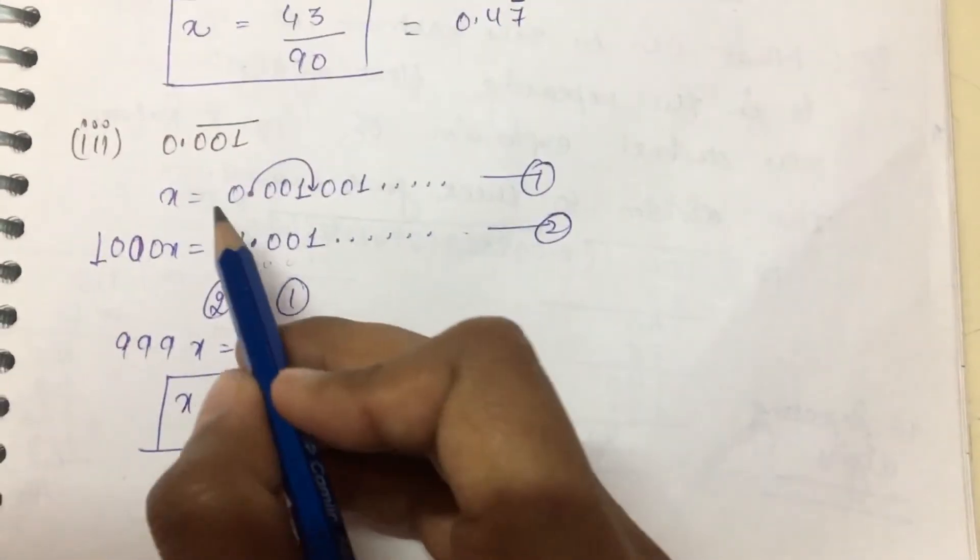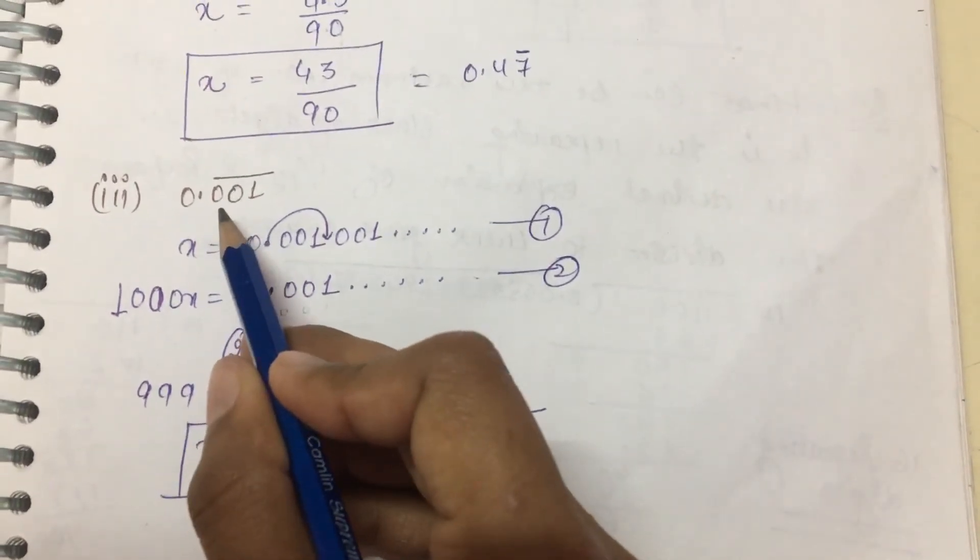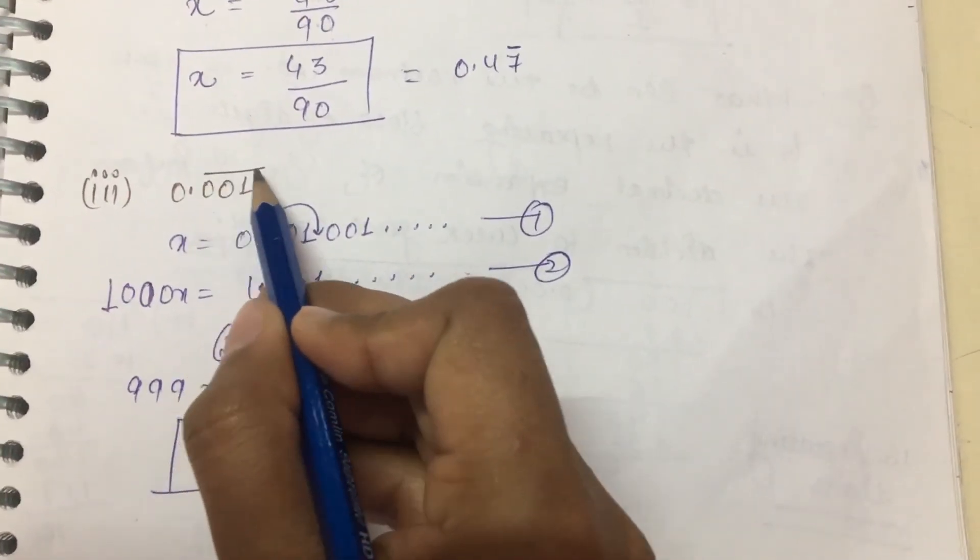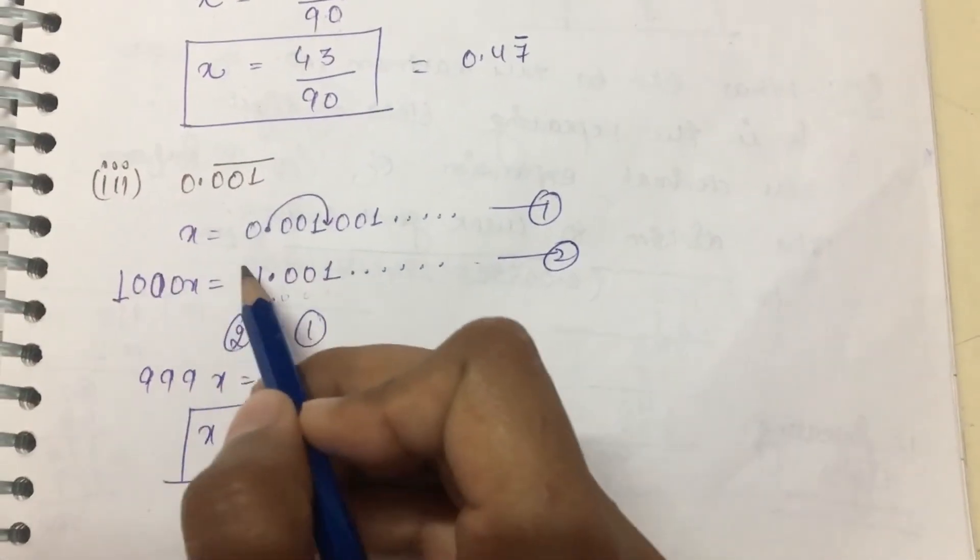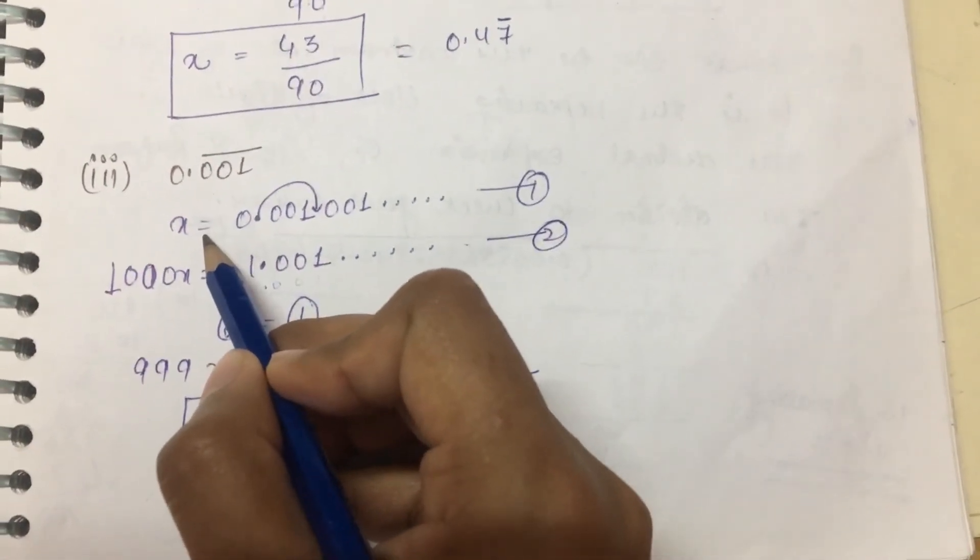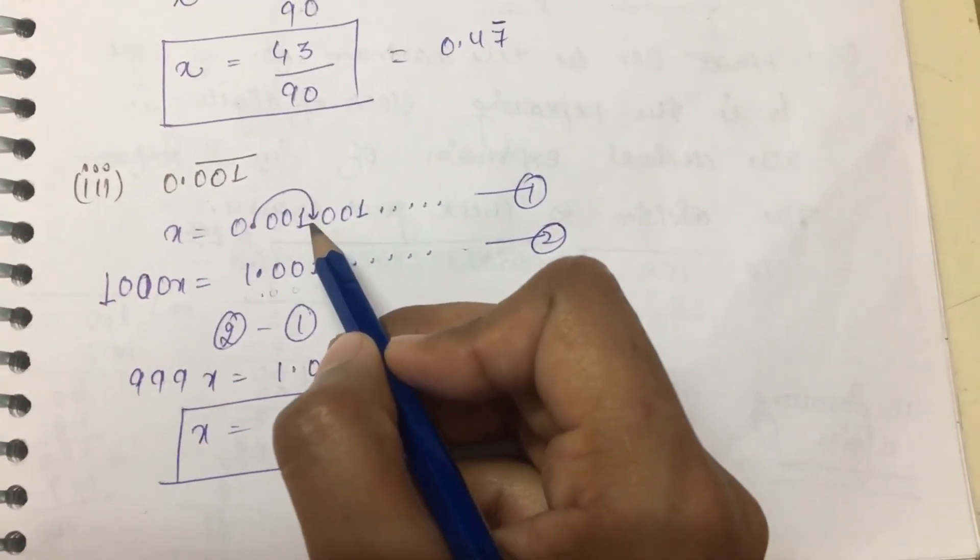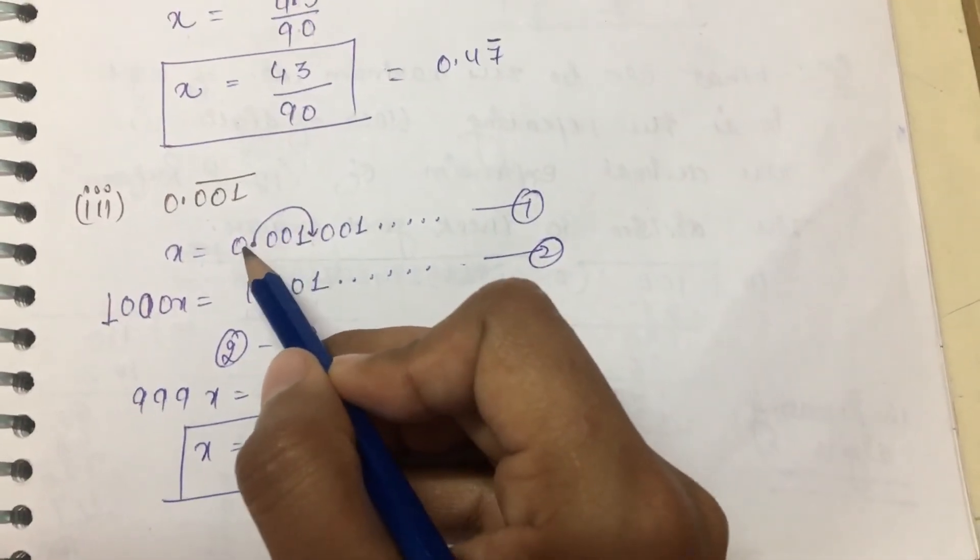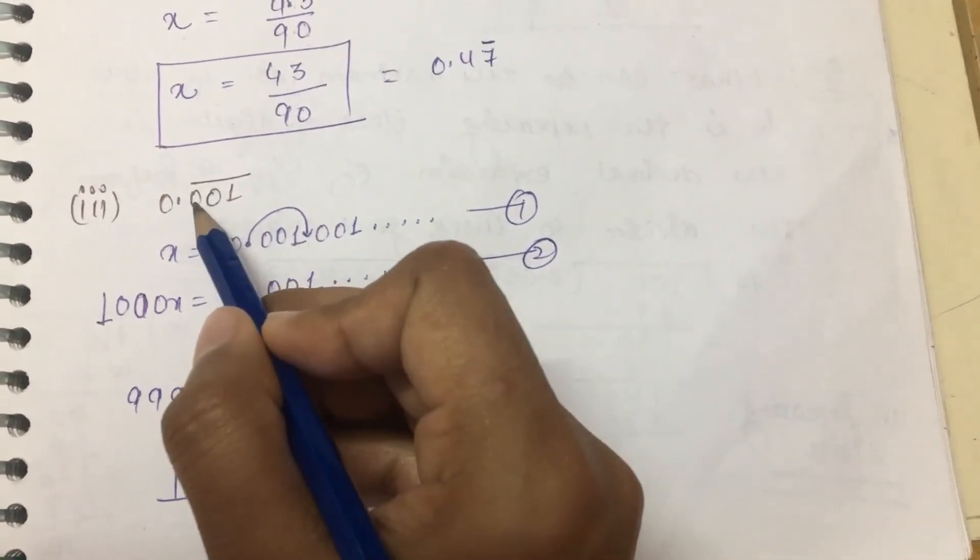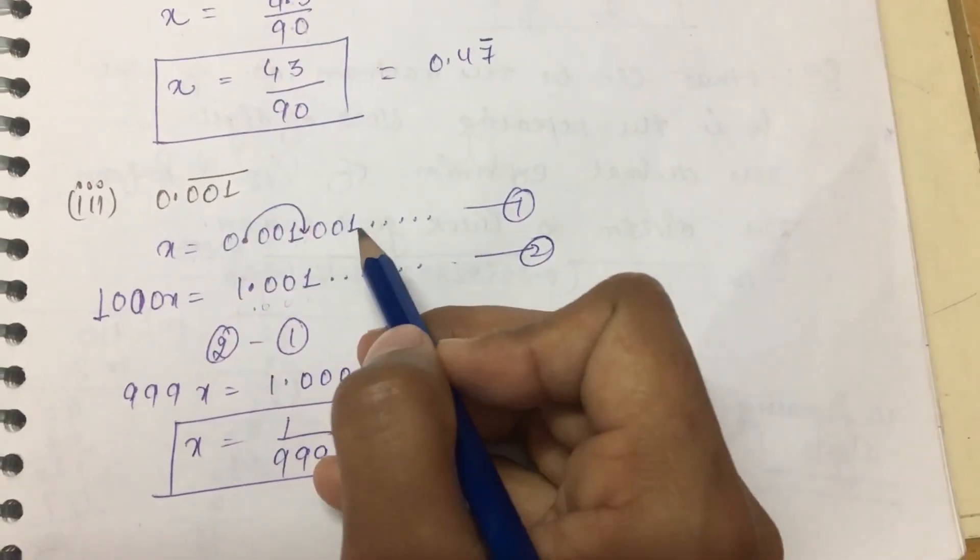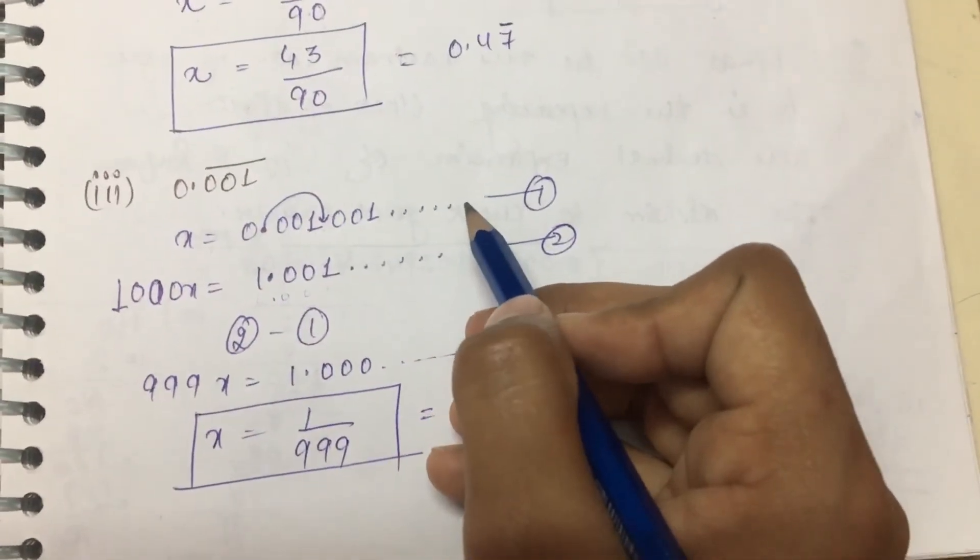Third part is 0.001 bar. How many digits are repeating? Three digits. So first let the number given equal x: 0.001 repeating, which is 0.001001 and so on.